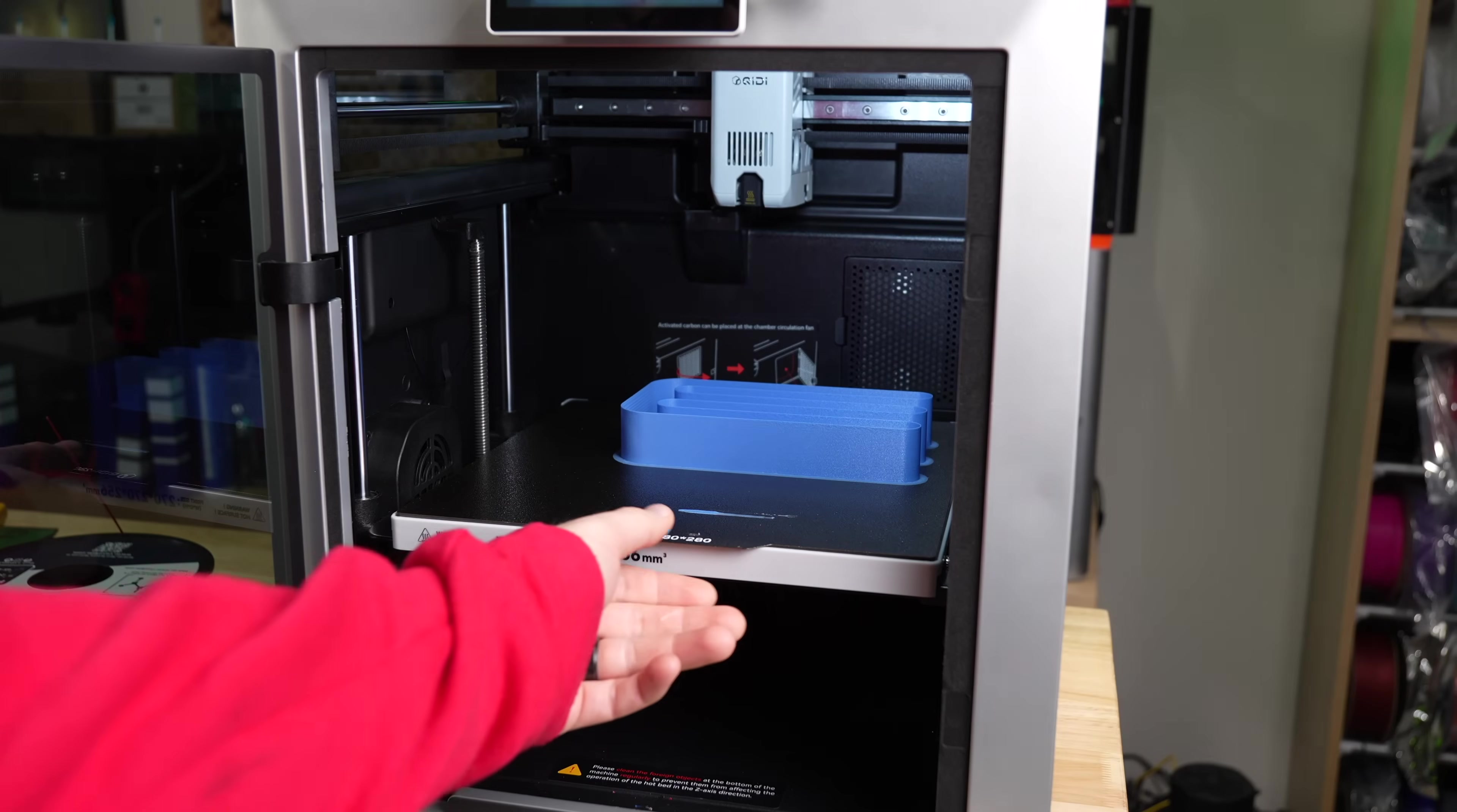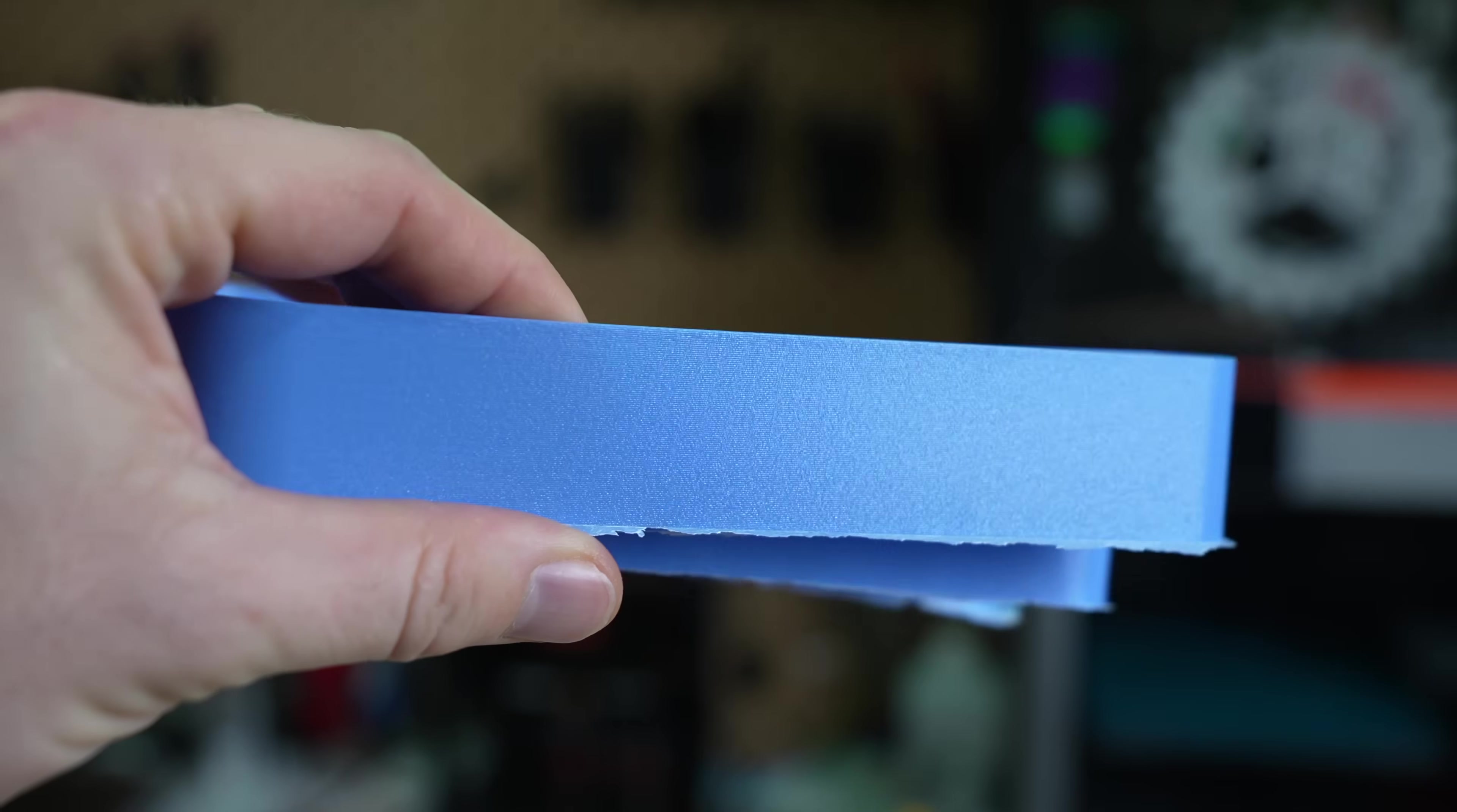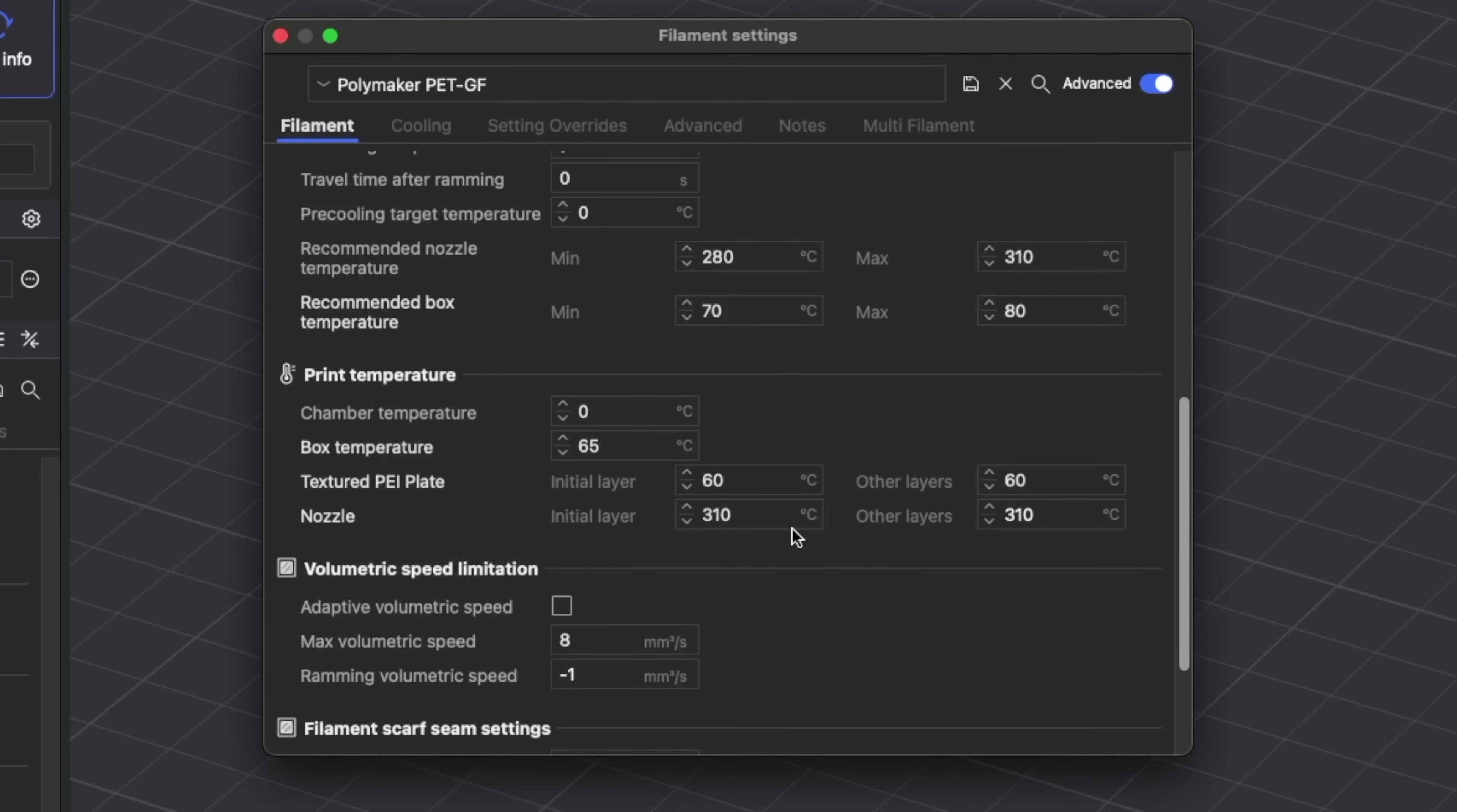So I bumped the temp up from 280 celsius up to 310 celsius and ran the exact same test again. This time the entire flow test looked better, and when I went to pull it off the build plate, even though it required force, none of the layers at all broke apart from each other. Due to this, I set the profile I created to 310 celsius, and that's what I used for all the rest of my testing.